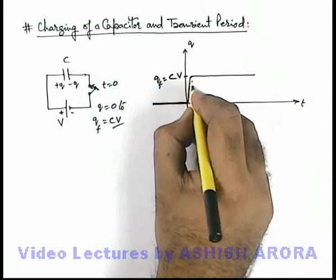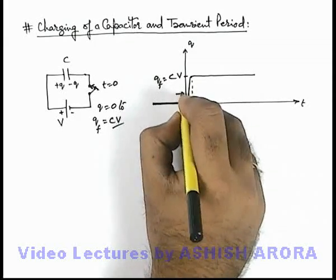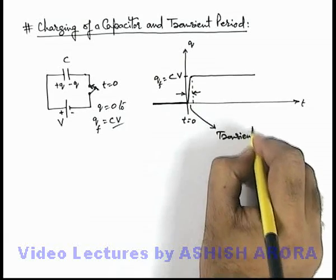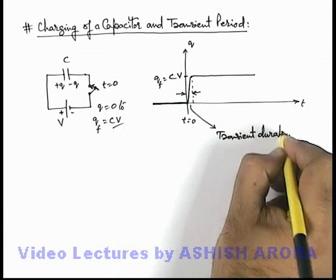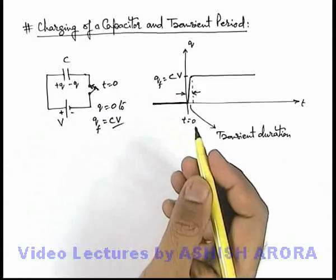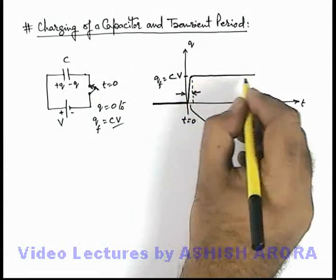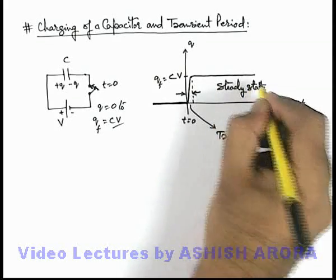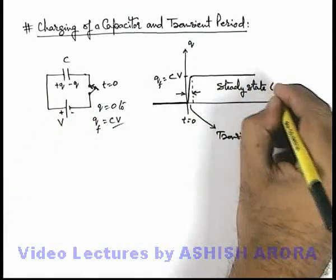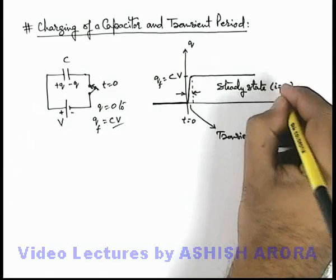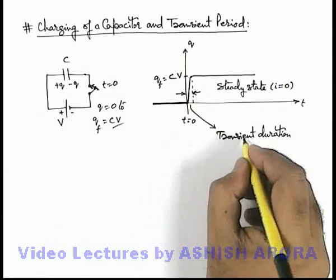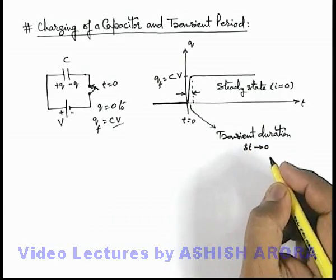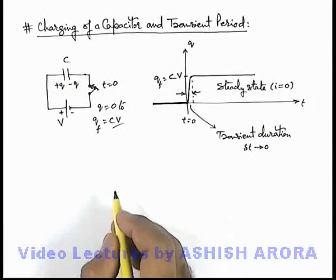This duration in which the capacitor is charged up is called the transient duration or transient period in which the capacitor was being charged. Once the capacitor is fully charged, this is called steady state of the capacitor, in which no more charges flow or the current in the circuit becomes zero. This transient duration delta-t will be tending to zero if the wires are considered to be perfect conductors.